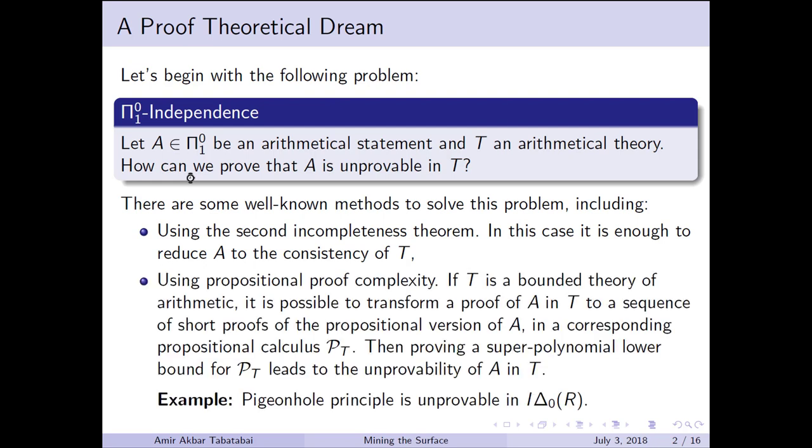We have also some other things like using propositional proof complexity. The thing is that if your T is a theory of bounded arithmetic, then usually for any T we have some propositional system P_T such that if you have some Σ₀₁ statement which is provable in A, then you can turn it to a sequence of propositional tautologies such that if A is provable, the sequence has a short proof. Therefore, if you prove a super-polynomial lower bound for P_T, it leads to a proof of unprovability of A in T.